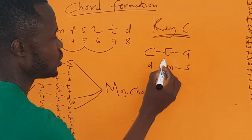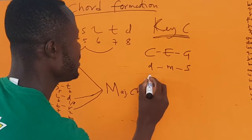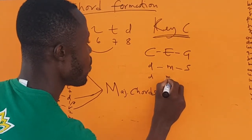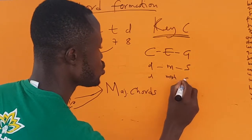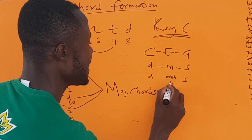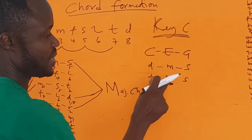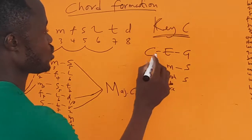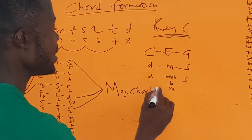If a chord is major, it is do, mi, so. But if a chord is minor, it becomes do, mo, so — meaning we have flattened the third, changing mi to mo. We've flattened the third, which is the same as sharpening the second, making it re.